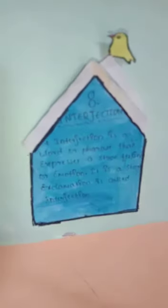Interjection. An interjection is a word or phrase that expresses a strong feeling or emotion. It is a strong exclamation. It is called an interjection. Examples of interjections: